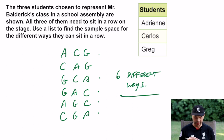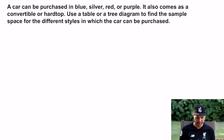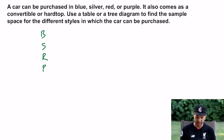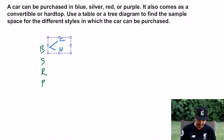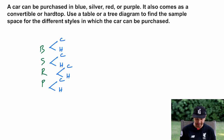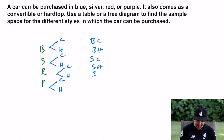Okay, so that's one way of finding sample space. It also says a car can be purchased in blue, silver, red, or purple, and it also comes as a convertible or a hard top. Use a table or a tree diagram to find the sample space. So each color — blue, silver, red, purple — can be either a convertible or a hard top.